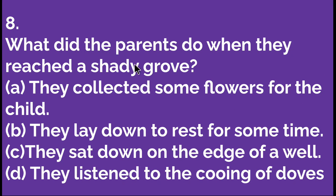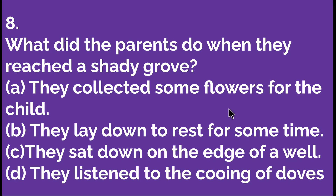The eighth question: what did the parents do when they reached a shady grove? Option A: they collected some flowers for the child. Option B: they lay down to rest for some time. Option C: they sat down on the edge of a well. Option D: they listened to the cooing of doves. C is the right option — they sat down on the edge of a well. So let's move to the next question.